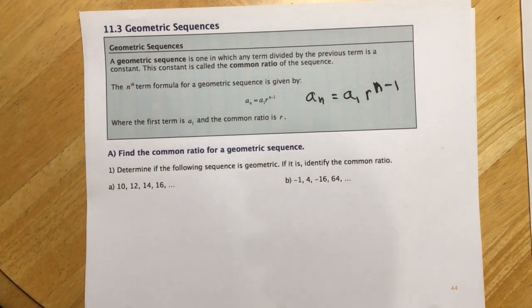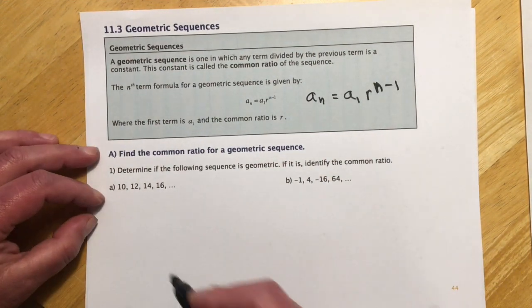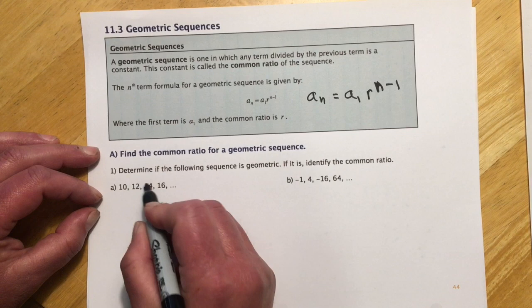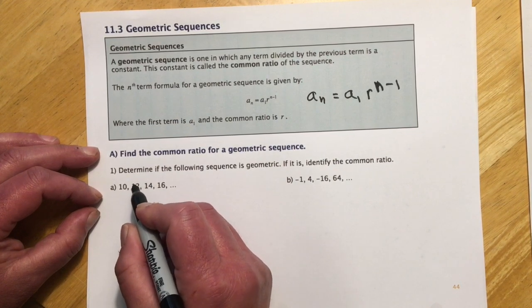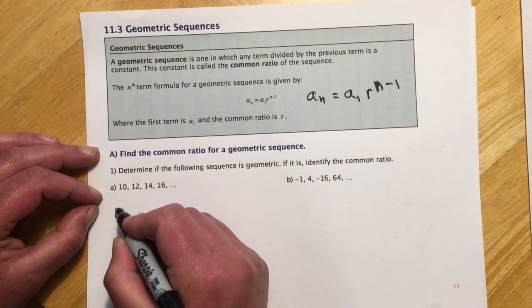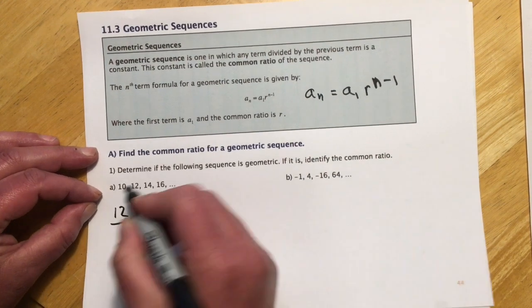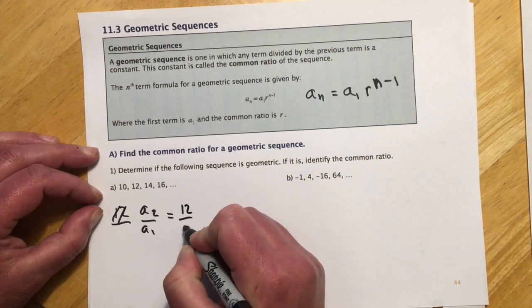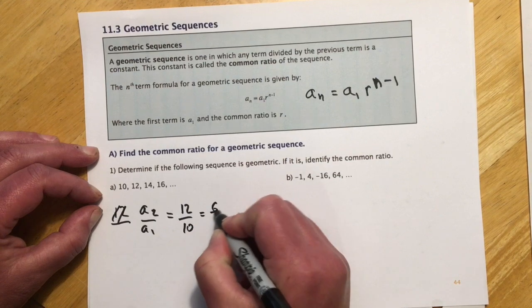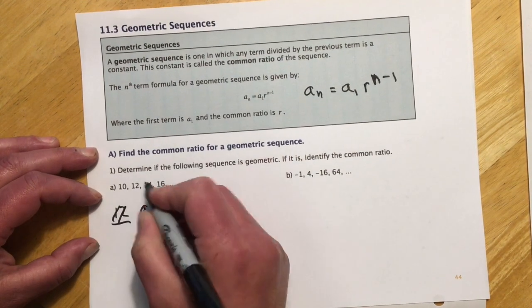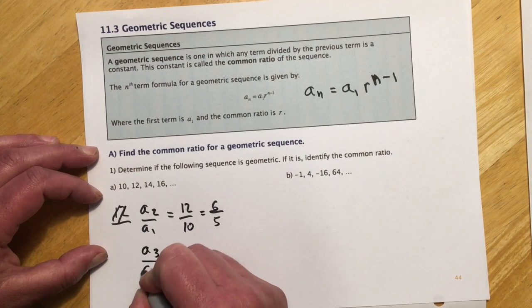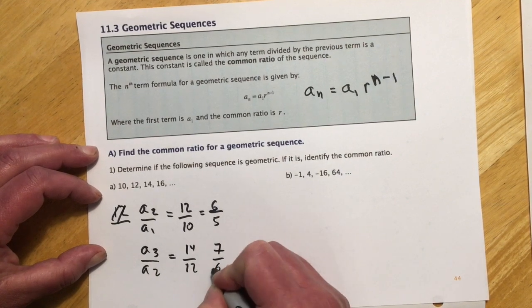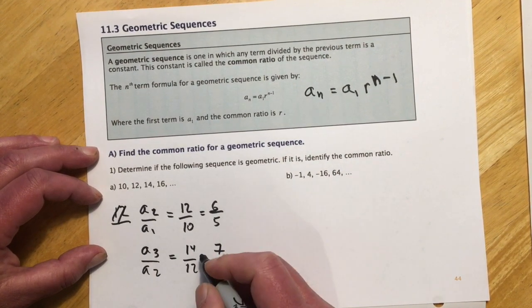So for arithmetic, we have common differences. For geometric, we have common ratios. So to find a common ratio, I just do the ratio of the first two terms. So I do the second term, and I can pick any two terms to do this with. But we pick the second one over the first one essentially. So for a sub 2 over a sub 1, the ratio would be 12 over 10, or 6 over 5. And I find the ratio of the next two terms. So a sub 3 over a sub 2, that ratio is 14 over 12, or 7/6. So these are not the same, so it doesn't have a common ratio.